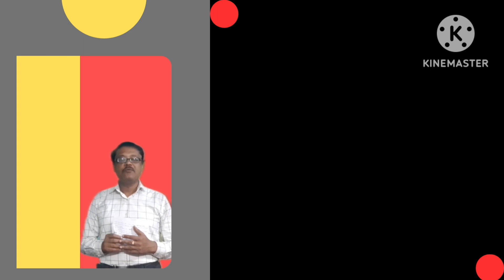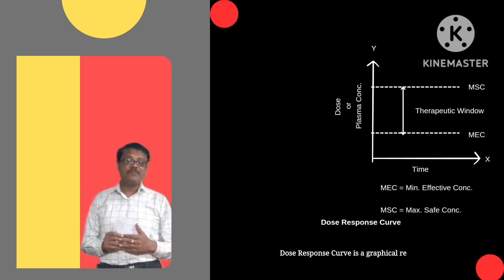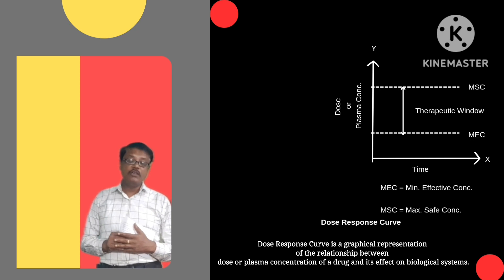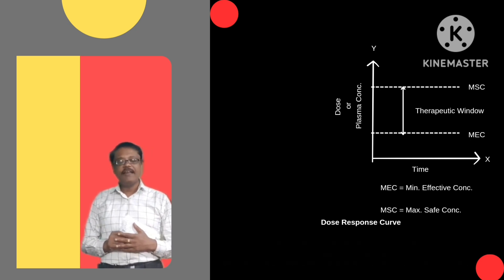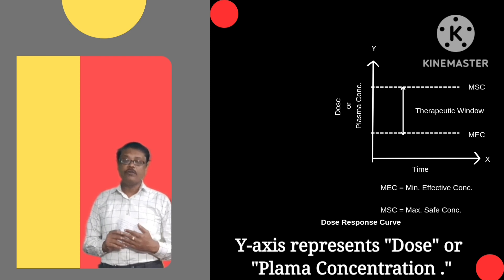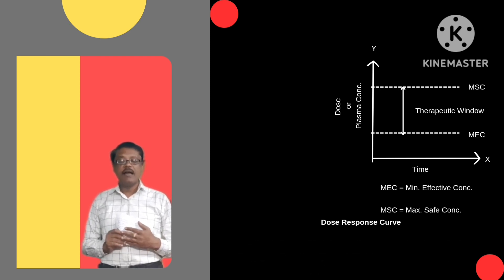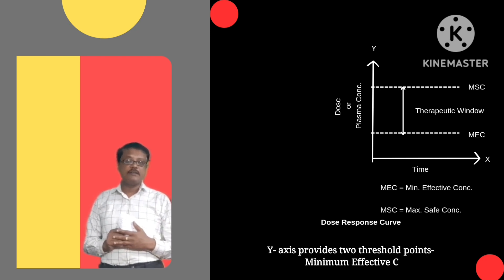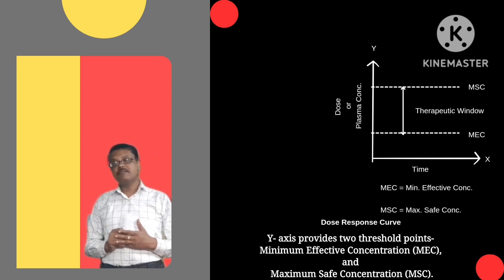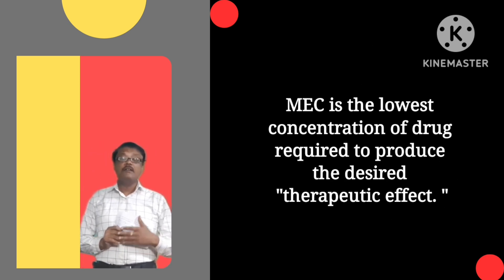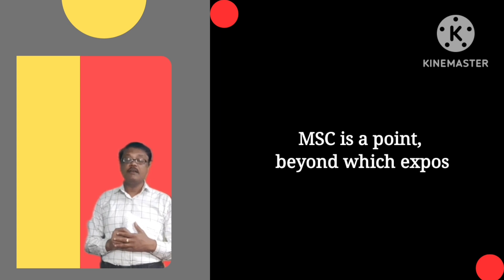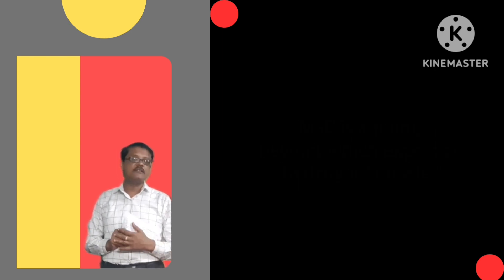Let's find our answer with the Dose Response Curve. The Dose Response Curve is a graphical representation of the relation between the dose or plasma concentration of a drug and its effects on a biological system. The x-axis represents time, and the y-axis represents the dose or plasma concentration of a drug. The y-axis also provides two threshold points: MEC, which is the minimum effective concentration, and MSC, the maximum safe concentration. MEC is the lowest concentration required to produce a therapeutic effect, and MSC is the threshold beyond which the drug exhibits a toxic effect.